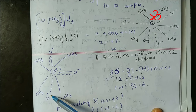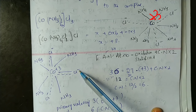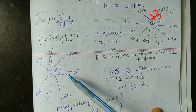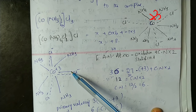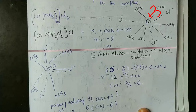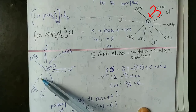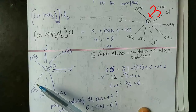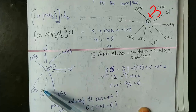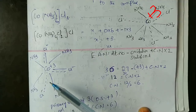Primary valency satisfies negative ions (i.e., charges) and is ionizable. Secondary valency satisfies both negative ions and neutral ligands — it satisfies both primary and secondary valency. Secondary valency is non-ionizable and directional in nature. Due to its directional nature, it gives shape to the complex, whereas primary valency does not predict the shape or geometry of the complex.